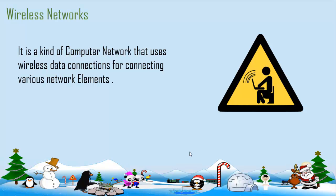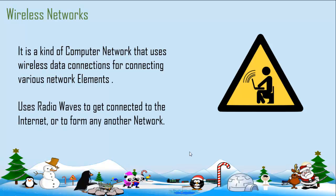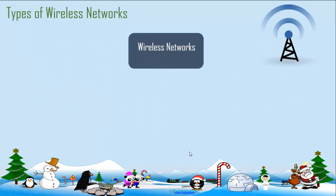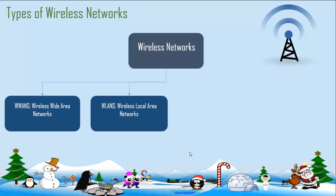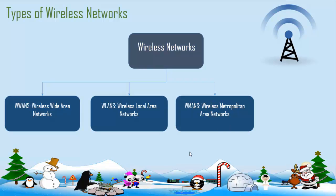The kind of medium or waves that help them connect is electromagnetic radio waves, to be a part of the internet or to form their own network. The types of wireless networks include wireless wide area network or WWAN, wireless local area networks or WLAN, and wireless metropolitan area networks.